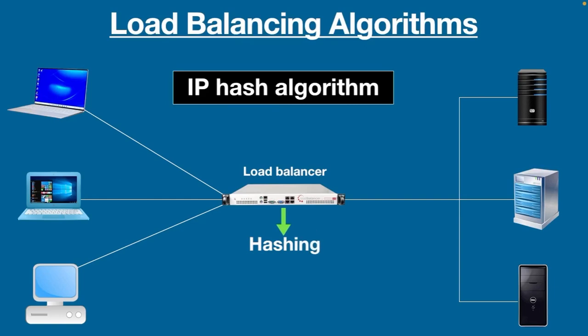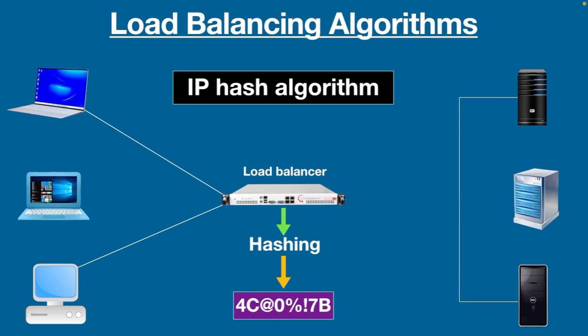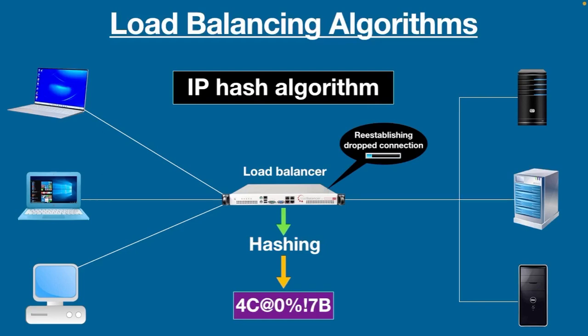Finally, the IP Hash algorithm. With this method, the load balancer performs a mathematical computation called hashing on the client IP address. Once the hash is created, it is used to route the request to the mapped server. The good thing about this algorithm is it re-establishes a dropped connection with the same server. So this was a comparison of six different load balancing algorithms. The main purpose of using these algorithms is to send the client request to the best suited server. I hope this video helps you understand the differences between them.